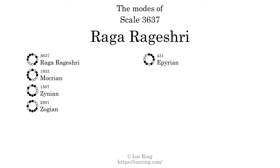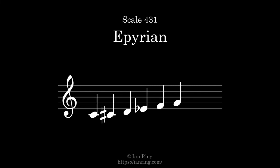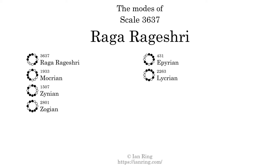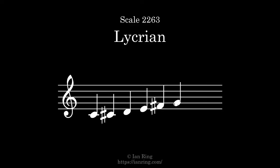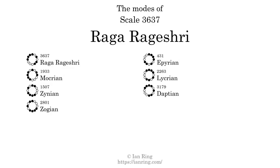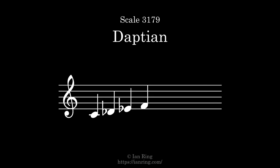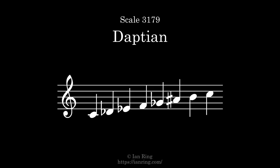The fifth mode is scale 4801, also known as Mokrian. The sixth mode is scale 2263, also known as Mokrian. The seventh mode is scale 3179, also known as Daption.